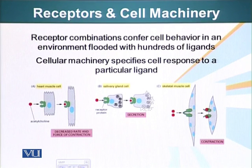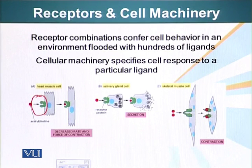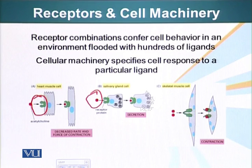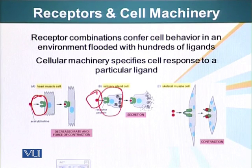For example, acetylcholine is a signaling molecule produced by nerves. When it binds its receptor on heart muscle cells, it decreases the rate or force of contraction. When the same acetylcholine molecule binds the same receptor present on salivary gland cells, it does not decrease the rate of contraction. Instead, it causes the salivary gland cell to release or secrete certain proteins that it had stored.